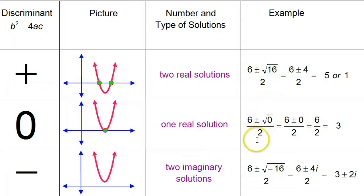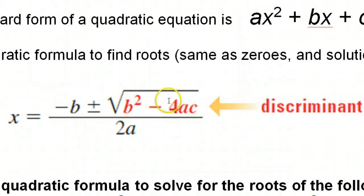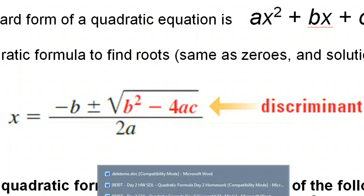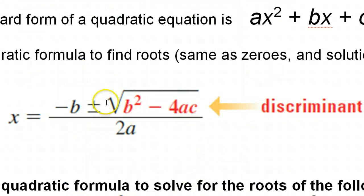Now, if you think about where the discriminant is in the quadratic formula, this should be common sense. Remember, the discriminant is under the radical. Think about how we get our two solutions in the first place — when we do the quadratic formula, built into it we have this plus or minus. The plus or minus is where we get our two different solutions: we're adding something, and that gives us one solution, and we're subtracting something, and that gives us the other solution.